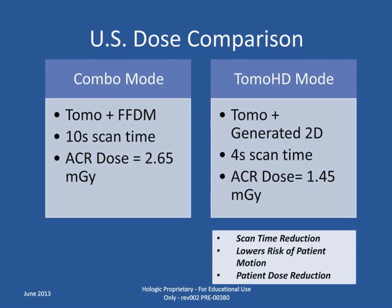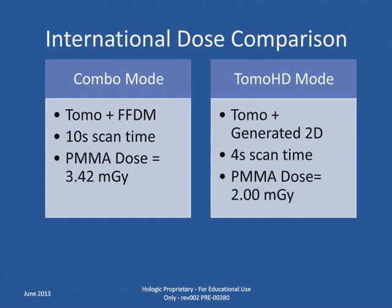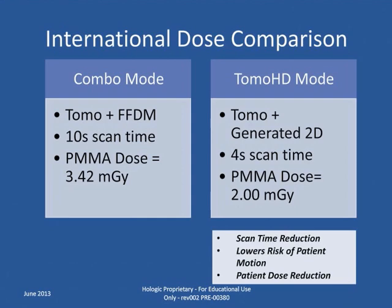The shorter scan time also lowers the risk of patient motion. Outside the United States, the requirements are slightly different. A combo mode with the same 10-second scan is approximately 3.42 milligrays using the UREF dose calculation methods. With Tomo HD mode, there is only the 4-second tomosynthesis scan, which still results in a 2 milligray exposure. The patient experience is the same, with a shorter compression time, a reduction in dose, and the shorter scan time lowers the risk of patient motion.